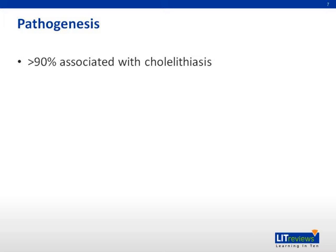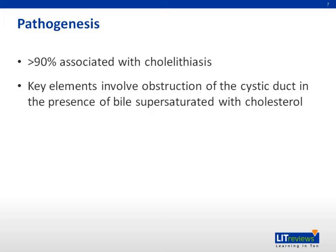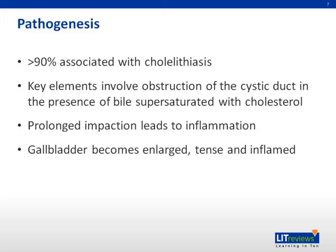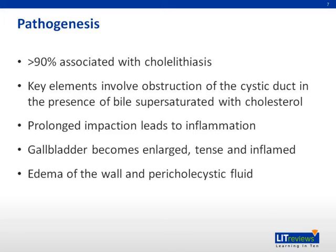More than 90% of cases of acute cholecystitis are associated with cholelithiasis. The key elements in pathogenesis seem to be an obstruction of the cystic duct in the presence of bile supersaturated with cholesterol. Brief impaction may cause pain only, but if impaction is prolonged over many hours, inflammation can result. With inflammation, the gallbladder becomes enlarged and tense. Wall thickening and a pericholecystic fluid exudate may develop.